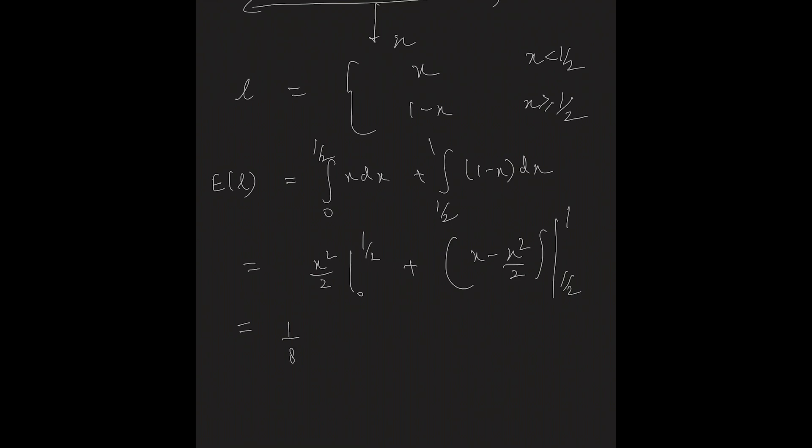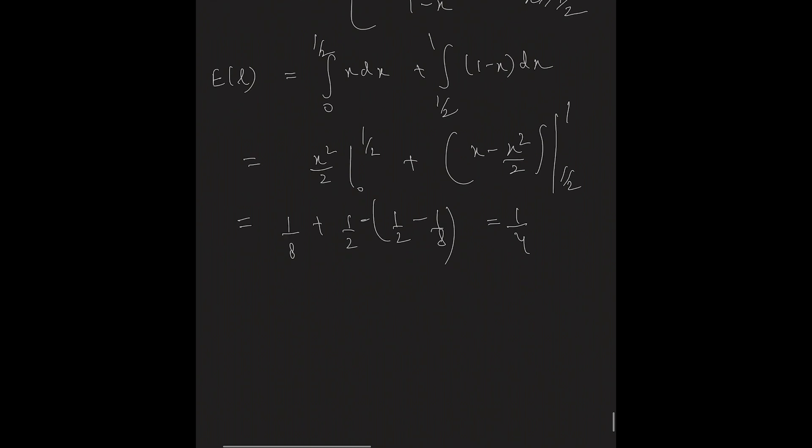Now, solving it further will give 1 by 8 plus half minus half minus 1 by 8, which is equal to 1/4. Therefore, average length of the smaller piece is 1 by 4.